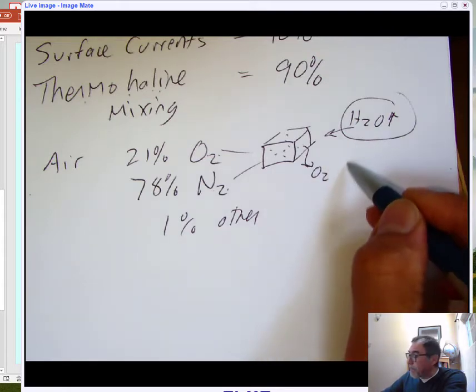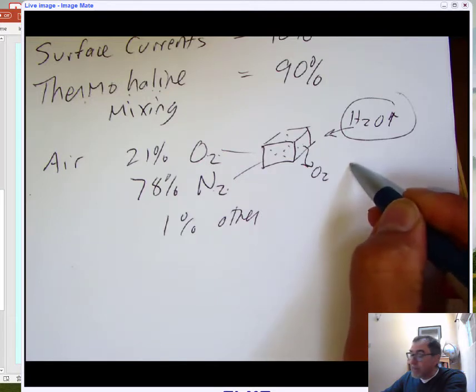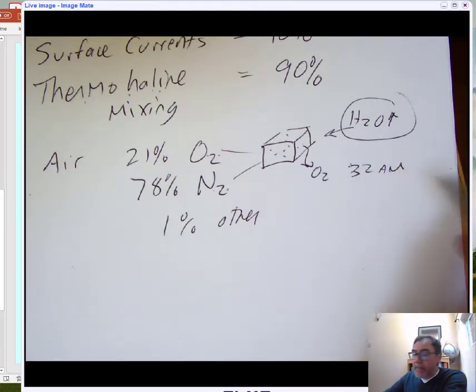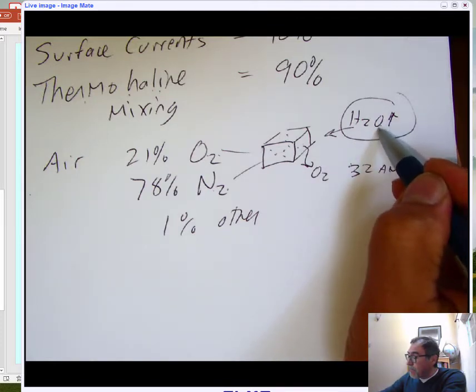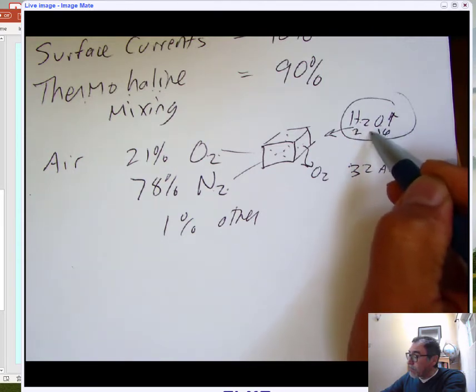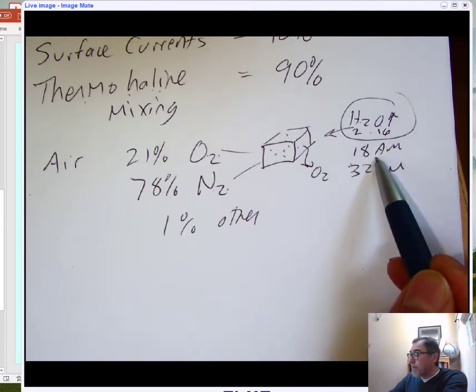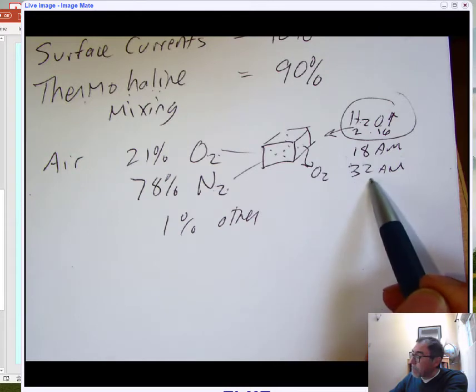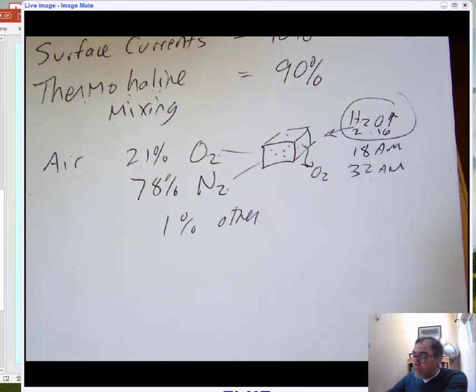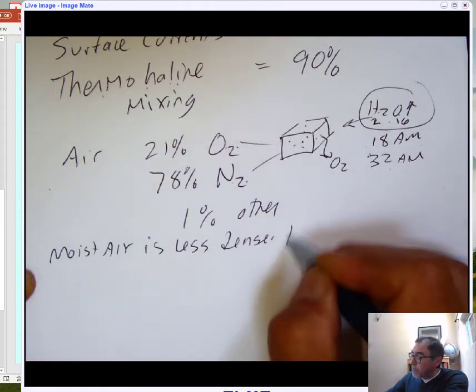We look at these atomic weights, the atomic weight of oxygen. Each oxygen weighs 16 atomic masses, and there's two of them. So we have 32 atomic mass. Whereas water, remember each oxygen is 16, but hydrogen is only one. Since we have two, we have 18 atomic masses. In other words, I'm replacing, taking a heavier molecule out and replacing it with a lighter molecule.